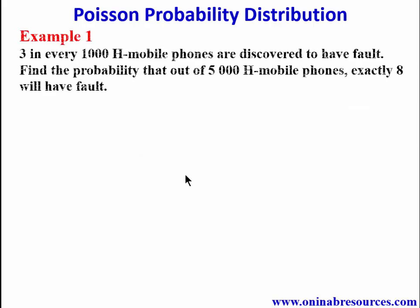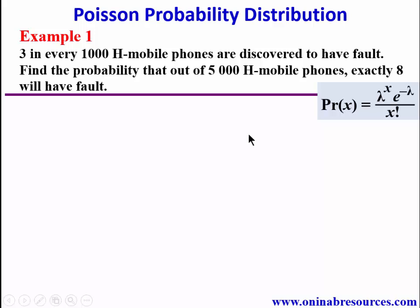Example one: Three in every 1,000 mobile phones are discovered to have a fault. Find the probability that out of 5,000 mobile phones, exactly eight will have a fault. We bring in the formula for Poisson probability distribution to find our lambda and our x.